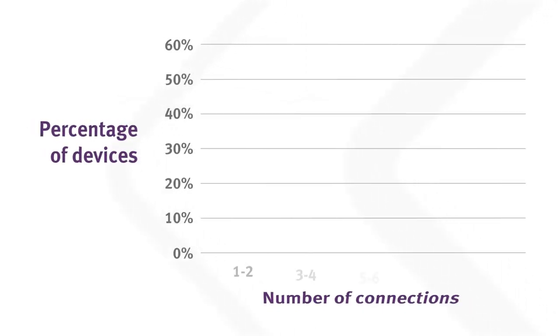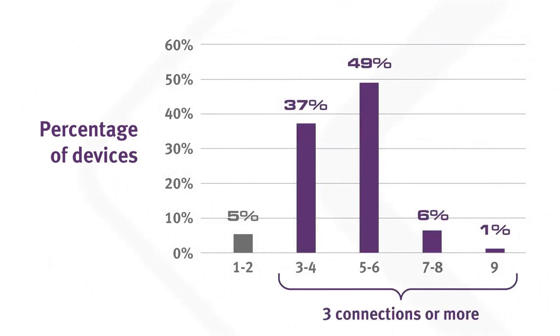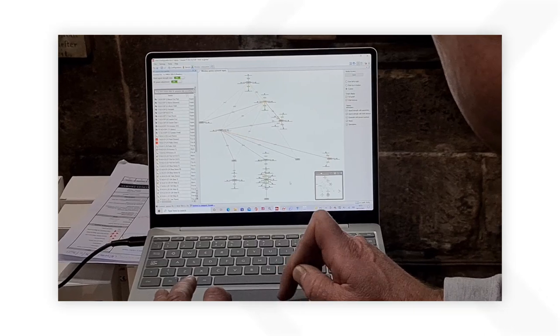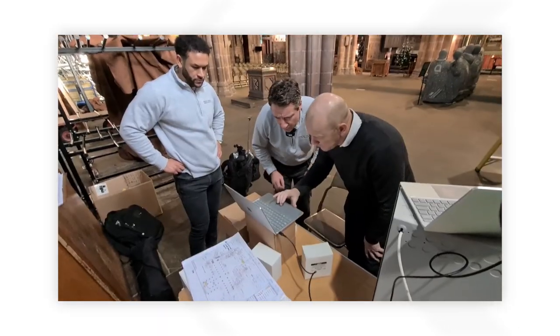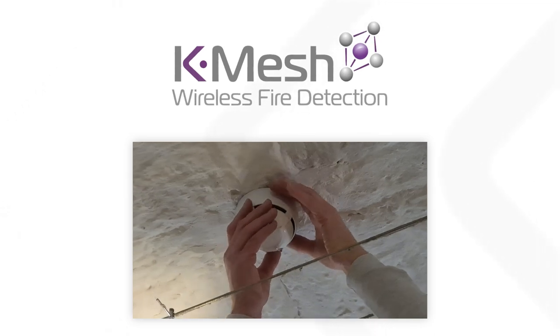The chart on the screen distributes the wireless devices into several groups based on the number of connections available to them. As you can see, 95% of all devices can connect to three or more expanders. To get the same level of network reliability in your project, just follow our simple recommendations, and the KMESH system will do the rest.